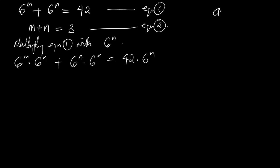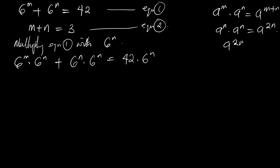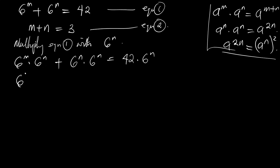According to the law of indices, a to the power m times a to the power n is the same as a to the power m plus n. Also, a to the power m times a to the power m is the same as a to the power 2m. Applying these rules, we now have 6 to the power m plus n, plus 6 to the power m all raised to the power 2, equal to 42 times 6 to the power m.